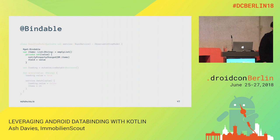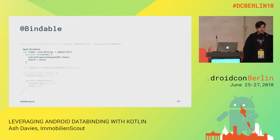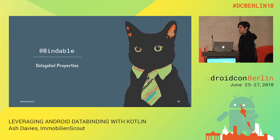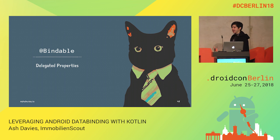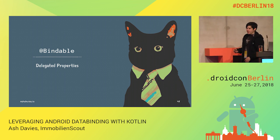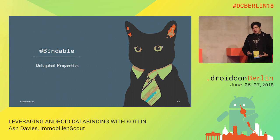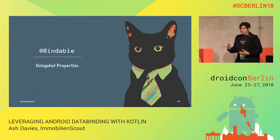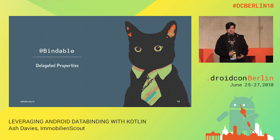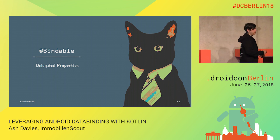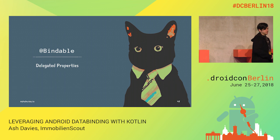But it's still a little bit verbose, so we can remove this boilerplate. Remember our delegate? We can create delegate properties again in Kotlin to define getters and setters as templates to reuse — and we can do so with an observable property to condense this getter and setter into just a property value.